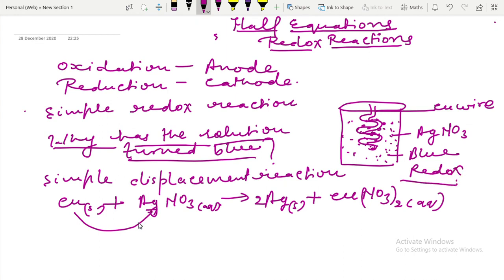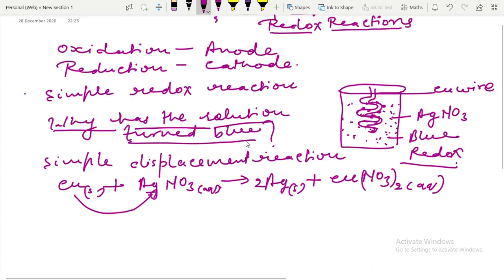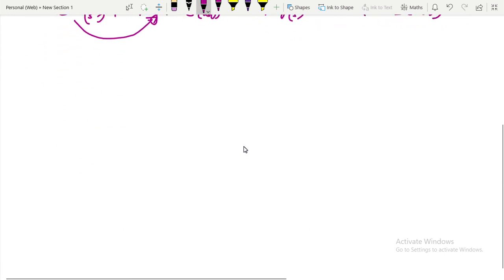Remember that oxidation means loss of electrons and reduction means gain of electrons. For a redox reaction, electron transfer has to happen with one substance losing electrons and another substance gaining electrons.